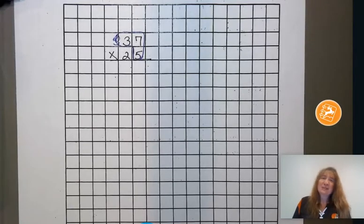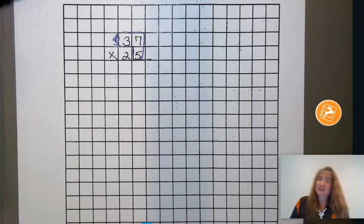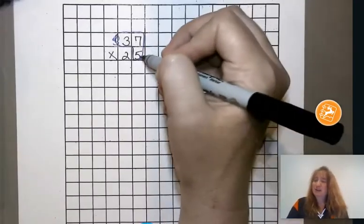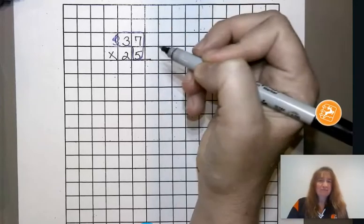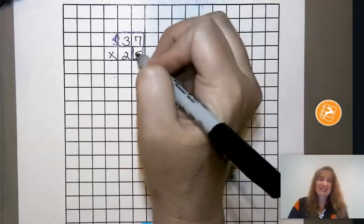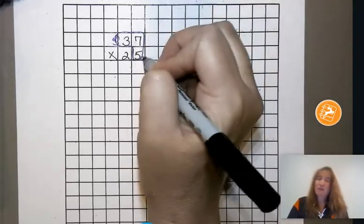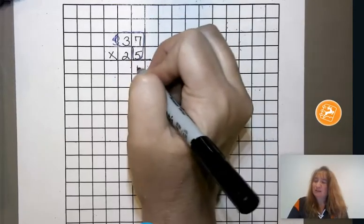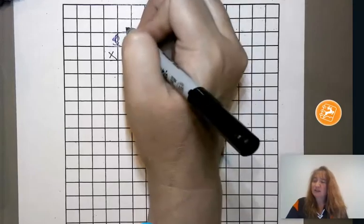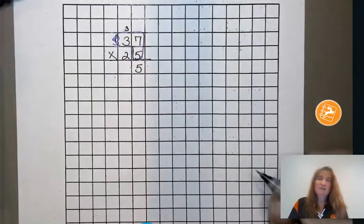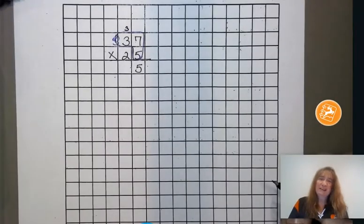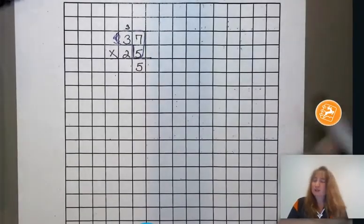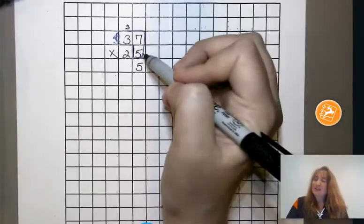So we're going to approach this like we did with just multiplying by a single digit. We're going to go through and do our 5 times 7, and 5 times 7 is 35. Once again, we're going to have to split that product above and below the line. So 35, put down the 5, carry the 3. We're carrying the 3 above the next number that we're going to multiply. We're going to multiply by the 3 next, which really is 30.